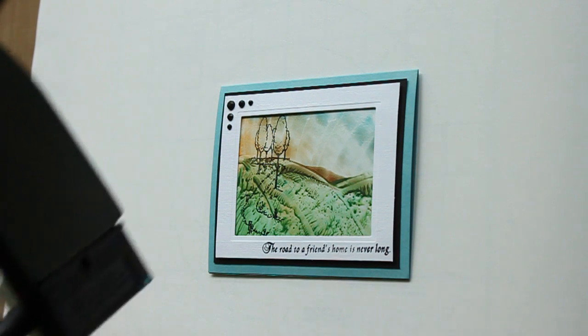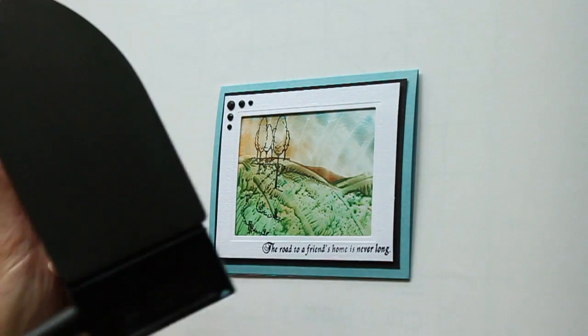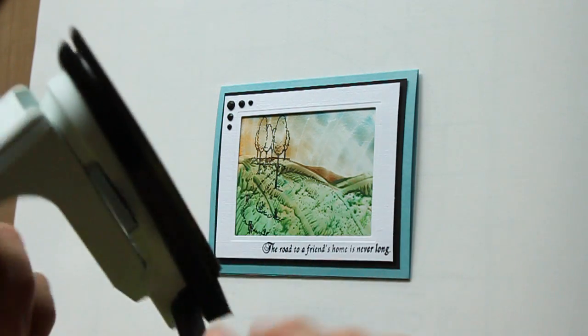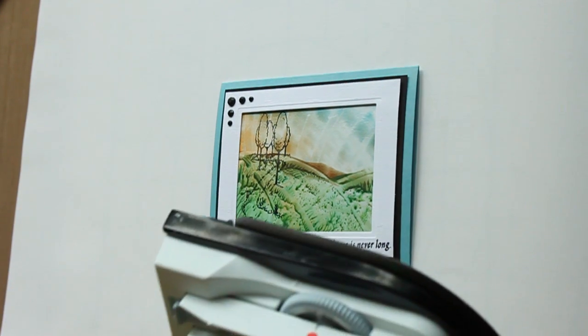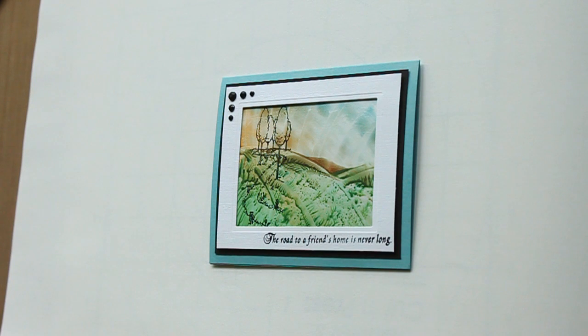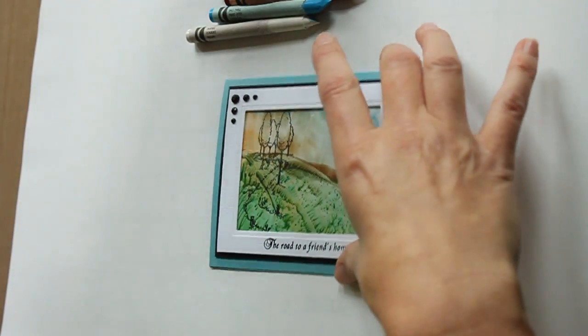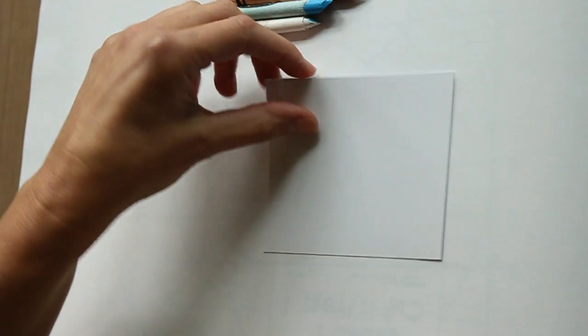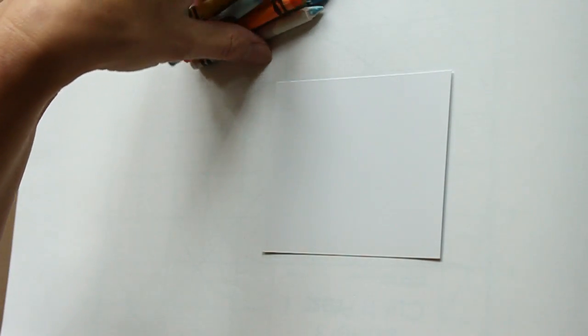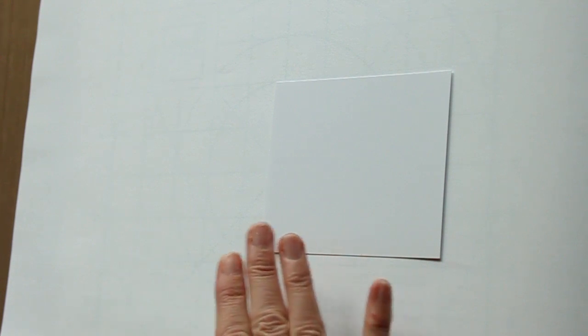You will need a travel iron or craft iron without holes, set on medium settings, and just regular crayons to start out with. You will also need cardstock. You can use glossy as well as regular cardstock, but the wax moves a lot easier on glossy.